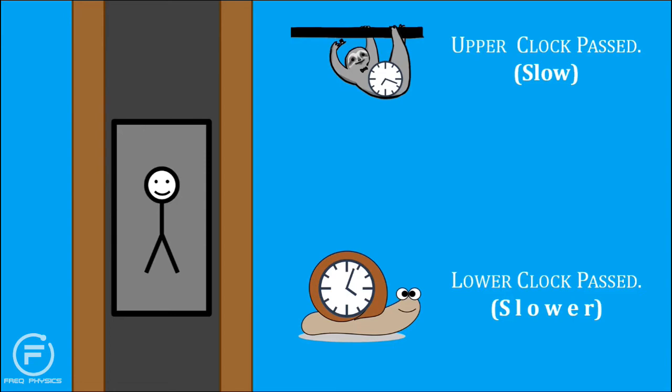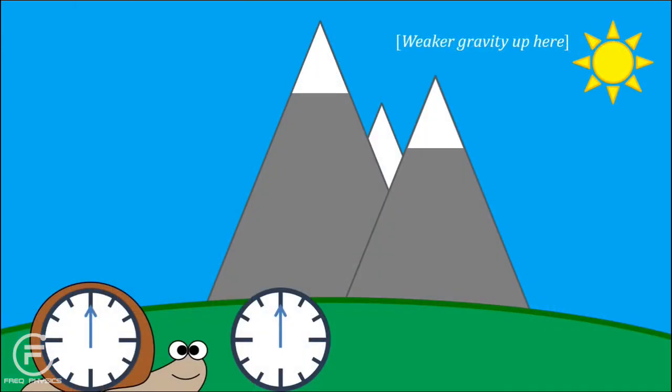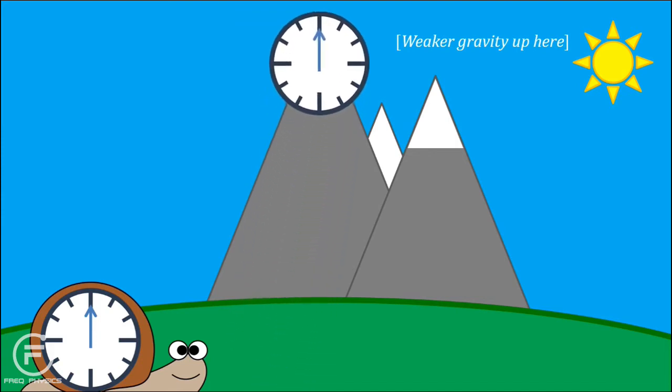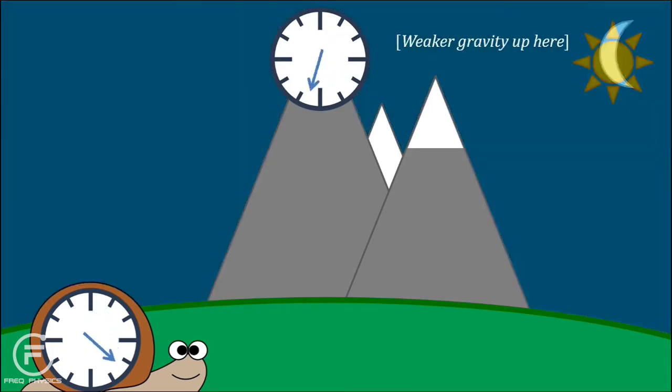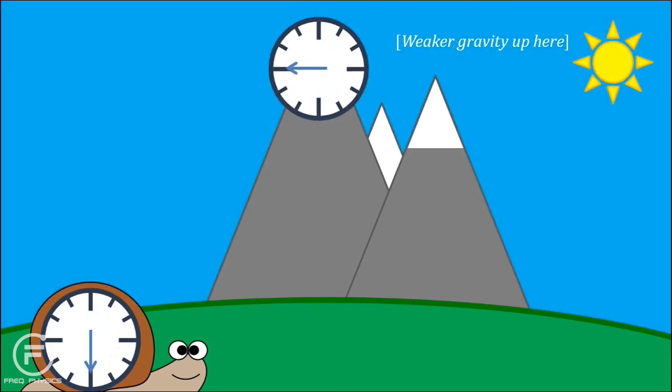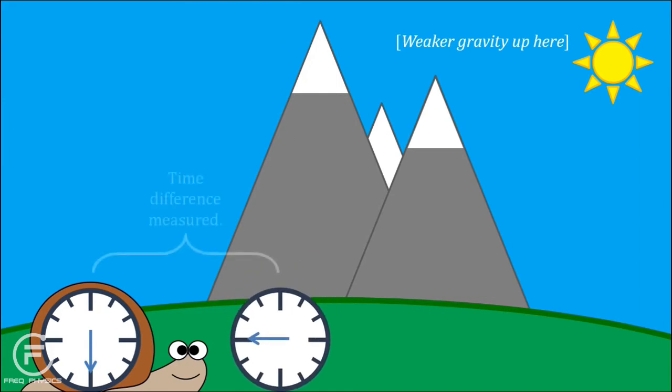We can use the equivalence principle to show that this means that time will run slower lower down in the gravitational field. This is gravitational time dilation, an effect demonstrated when atomic clocks transported to the top of mountains were found to run faster than those kept at sea level.